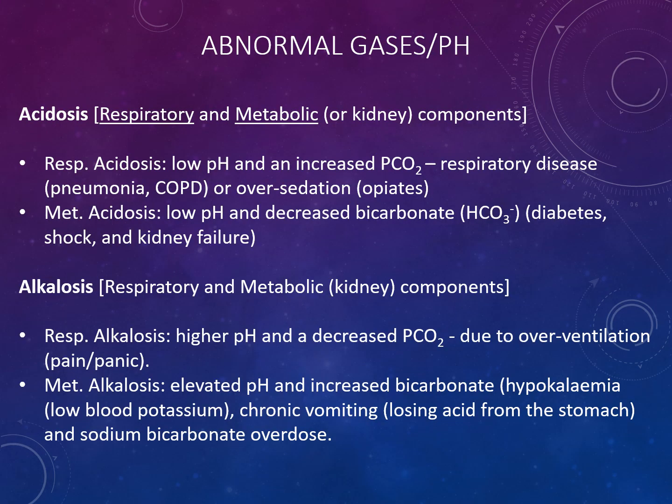Also measured in the laboratory are arterial blood gases and pH. This can be due to acidosis — both respiratory and metabolic components. Respiratory acidosis involves a low pH and increased partial pressure of carbon dioxide, resulting from respiratory diseases such as pneumonia, chronic obstructive pulmonary disorder or over-sedation from opiates. Metabolic acidosis involves a low pH and decreased bicarbonate and can come from diabetes, shock and kidney failure. For alkalosis — respiratory alkalosis presents with a higher pH and decreased partial pressure of carbon dioxide due to overventilation, pain or panic. Metabolic alkalosis presents with elevated pH and increased bicarbonate, and can be caused by hypokalaemia, chronic vomiting losing acid from the stomach, and sodium bicarbonate overdose.